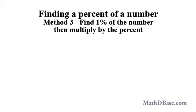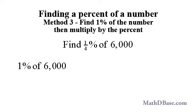In the third method, find 1% of the number, then multiply the number by the given percent. Let's use this method to find 1 quarter percent of 6,000. Since 1 quarter is 1 fourth of 1, first find 1% of 6,000, then divide the result by 4.